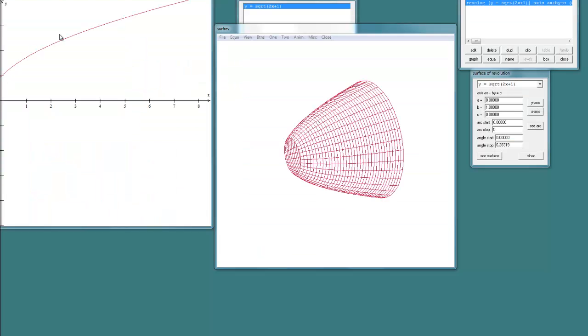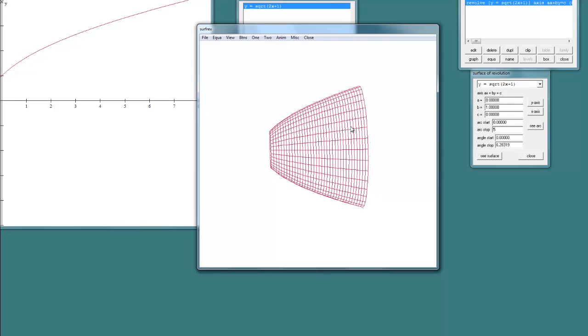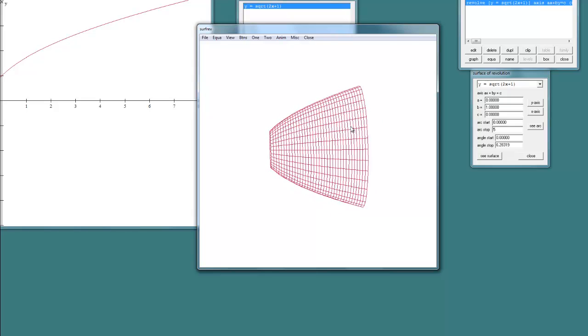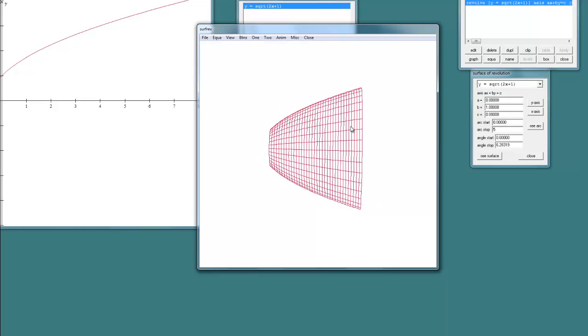And actually I'm going to show you really quick what that surface looks like. So here's my curve, square root of 2x plus 1, and if I take between x equals 0 and x equals 5 and revolve it around the x axis, I get a surface that looks like this. So notice this isn't a solid, not a solid shape, but just this surface. My goal is to find the area of this surface.